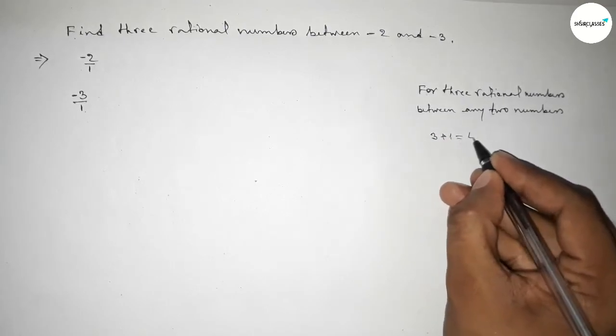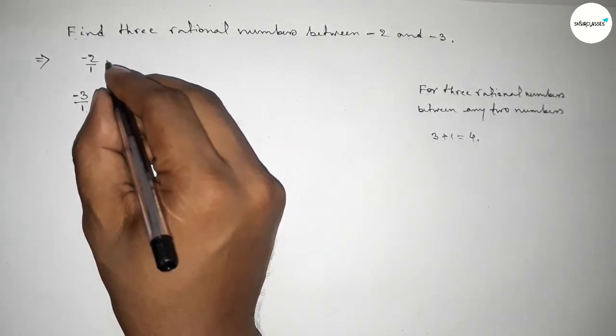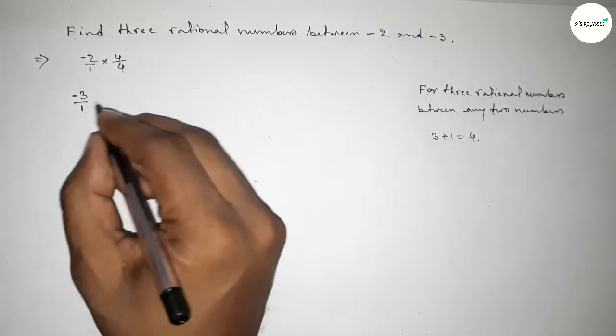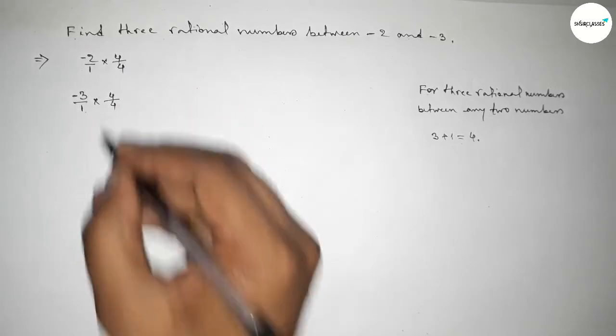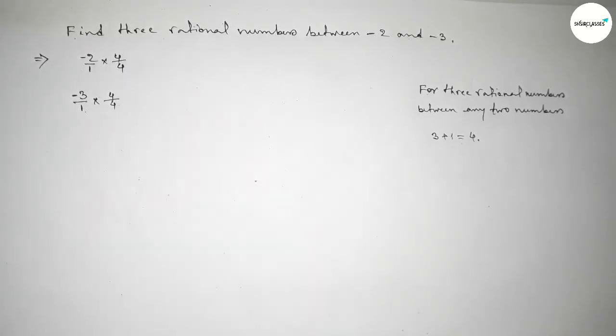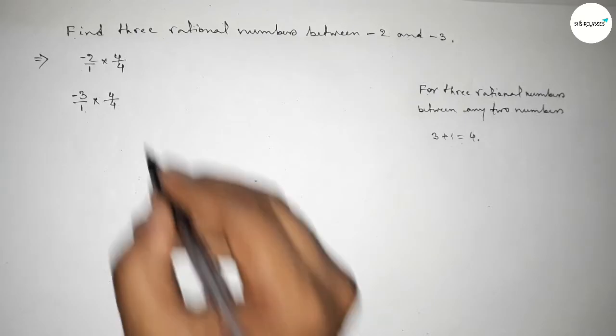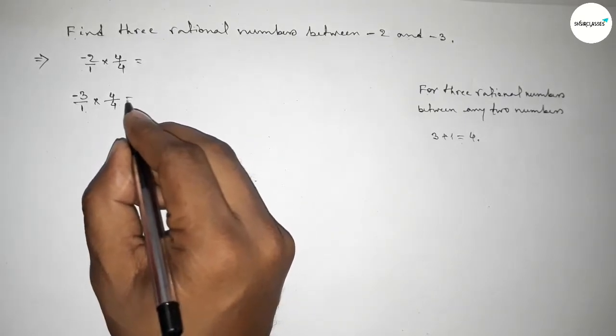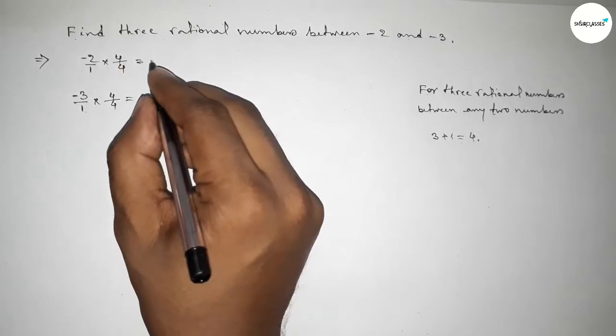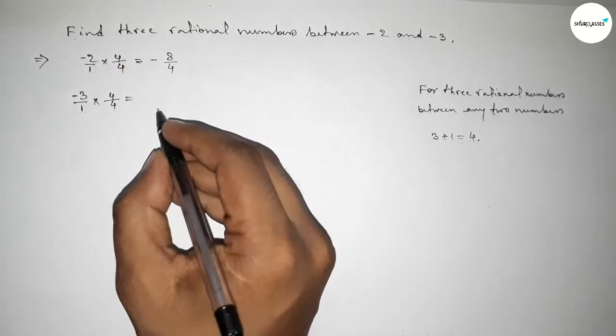We should multiply 3 plus 1 equals 4 with both numbers. So multiplying by 4/4, we get -8/4 and -12/4.